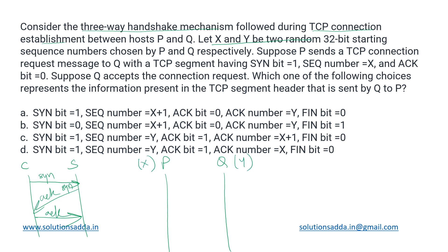What is the role of sequence numbers? TCP is a byte stream protocol, so every byte is numbered. If my sequence number initially is X and I am sending 100 bytes in a segment, the sequence number would be updated to X plus 100, suggesting how many bytes have been sent. That is the role of sequence numbers.